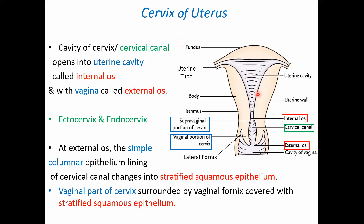Moving to the cervix of the uterus: the fundus, body, and cervix are identified in the diagram. The internal os is the opening of the uterine cavity with the cervical canal; the external os is the opening of the cervical canal with the vagina. The endocervix is the extent from the internal os to the external os within the cervical canal — inside the cervix. The ectocervix is the part of the cervix extending beyond the external os towards the vagina.